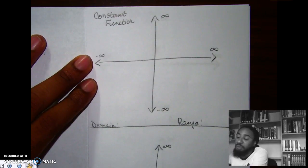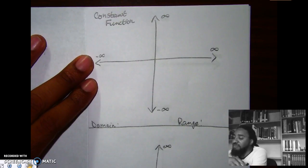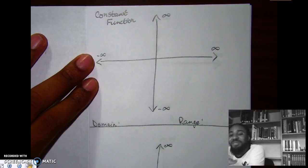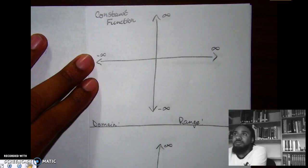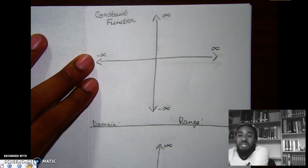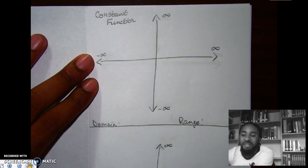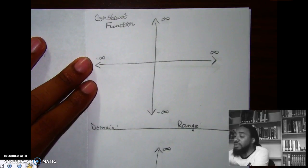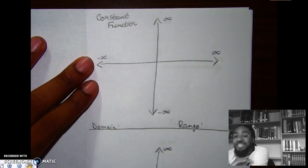If they're constant, that means they're always doing it — they don't change, they don't go up and go down. Like a sports team that's consistently winning, constantly going to the finals. So the constant function is a flat function that doesn't go up, doesn't go down, it just stays flat.